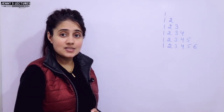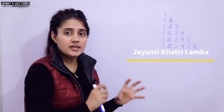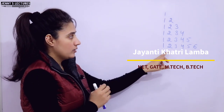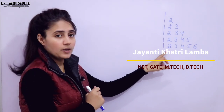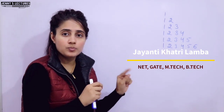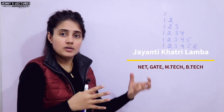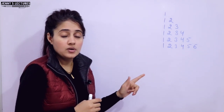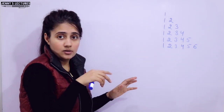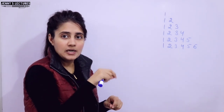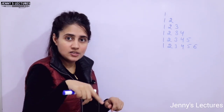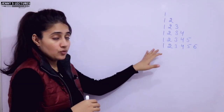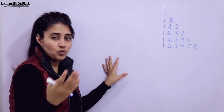In this series on learning programming in C, we are discussing programs for printing patterns. In this video, we will talk about how to write a program to print a half pyramid of numbers. We have already discussed half pyramid of stars and inverted half pyramid of stars — please check out those videos first. The playlist link for 'Printing Pattern in C' is in the description box.